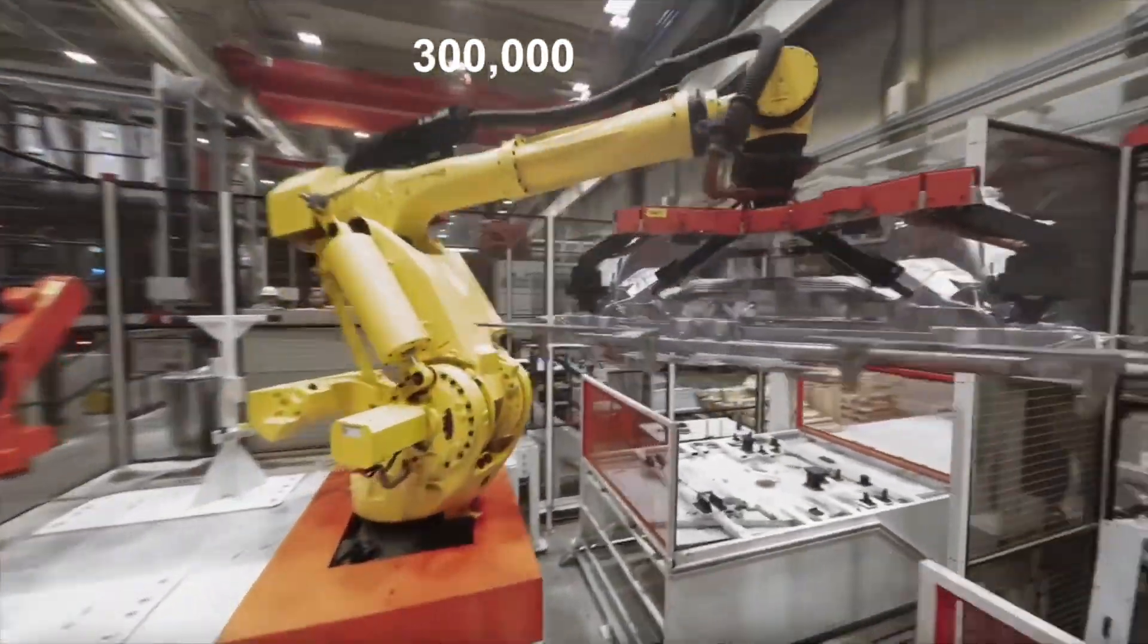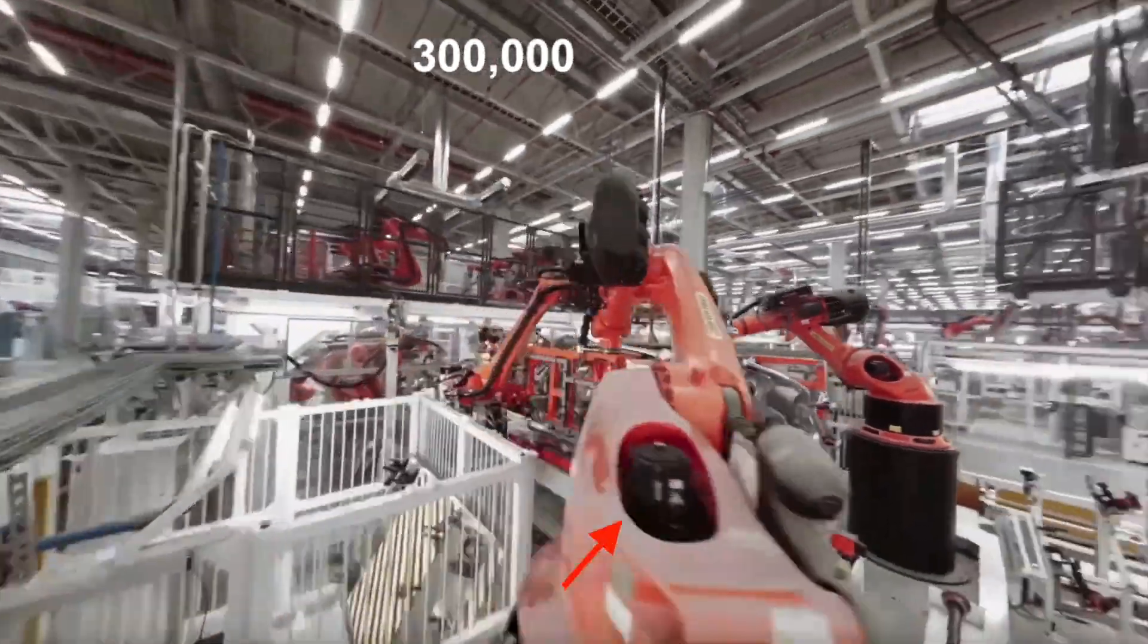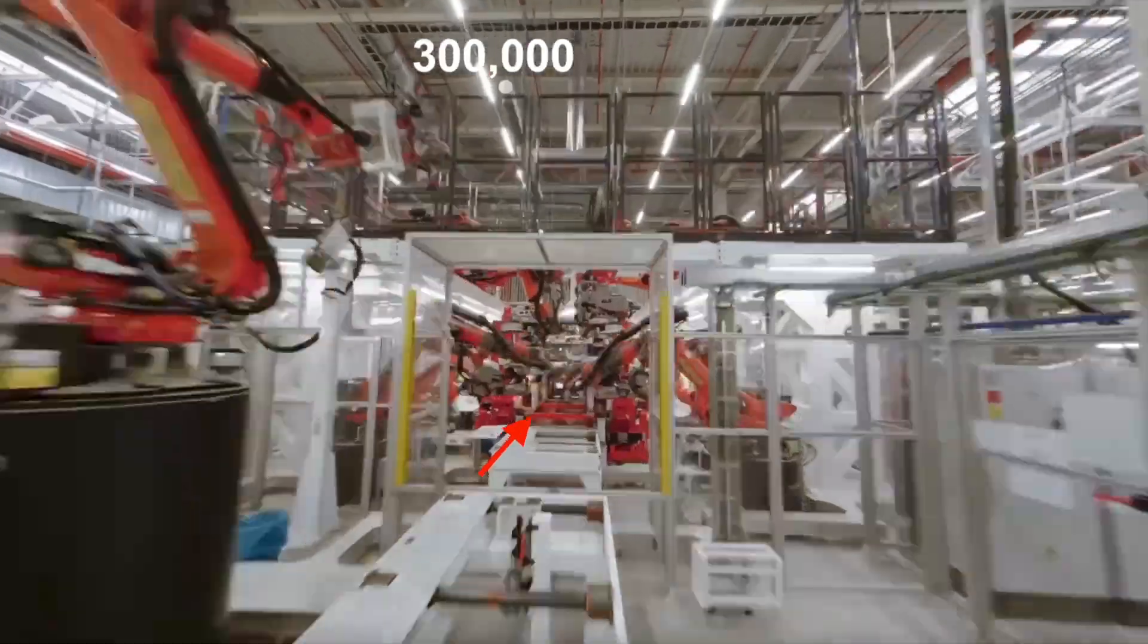In this video, we will discuss the fatigue subjected on the carrier skids that carry the body in white. The body in white is the metal skeleton of the car. It weighs around 500 kilograms, and it is built on top of carrier skids.